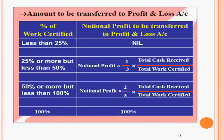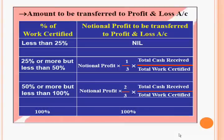We then calculate the amount to be transferred to the profit and loss account. If the percentage of work certified is less than 25%, nothing will be transferred to the profit and loss account. If work certified is 25% or more but less than 50%, then we transfer one-third of the notional profit in the ratio of total cash received to total work certified.